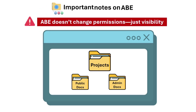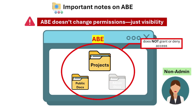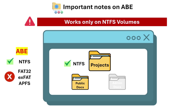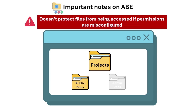Here are some important notes to consider when using ABE. First, ABE doesn't change permissions — just visibility. It only hides files and folders from users who don't have permission; it doesn't grant or deny access. Second, ABE works only on NTFS volumes. It is deeply tied into the NTFS permission structure and cannot function on older or simpler file systems. ABE is supported only on volumes formatted with NTFS — it doesn't work with FAT32, exFAT, or other file systems.